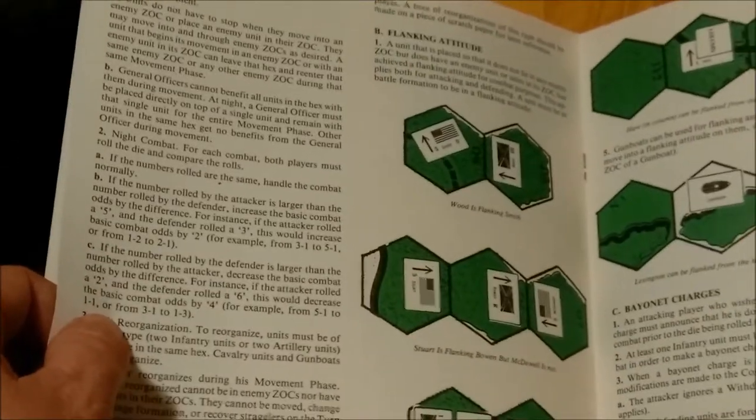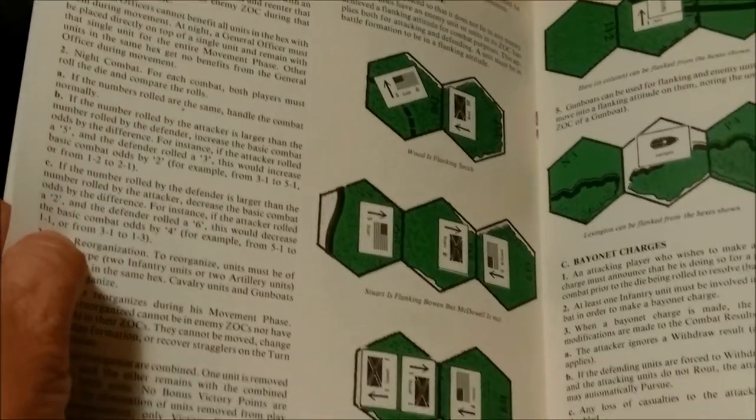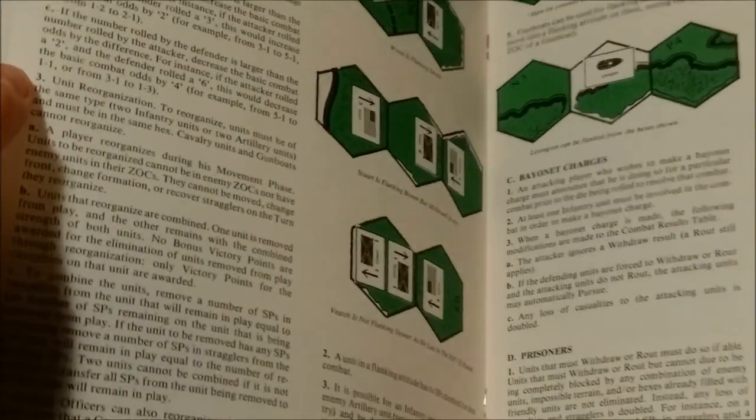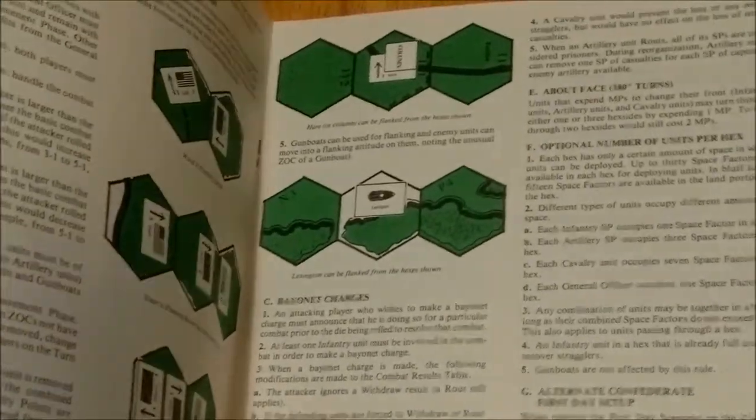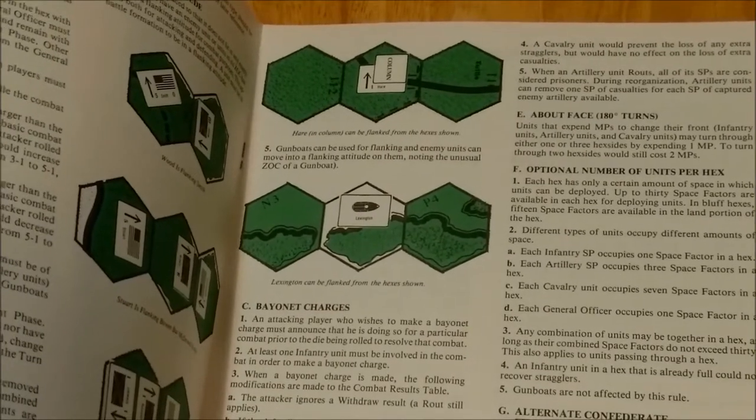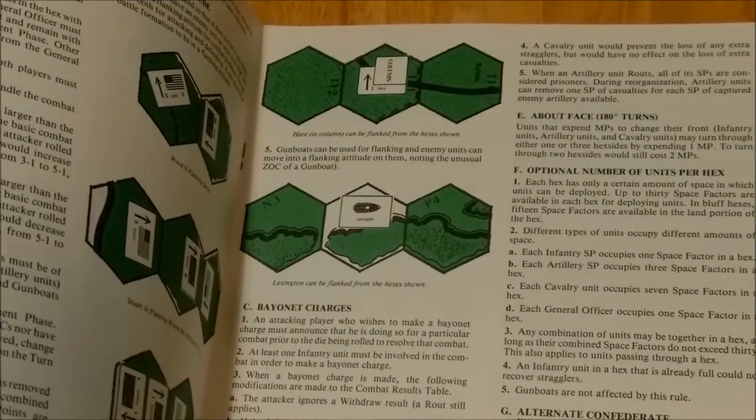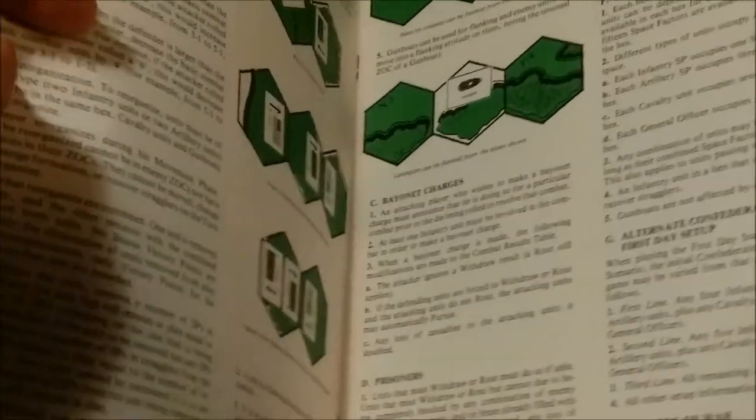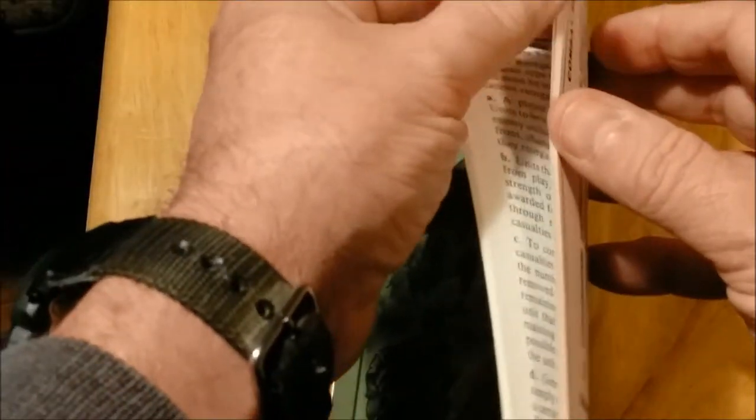It basically costs enemy unit one extra movement point to enter. Then we have some optional rules such as flanking, bayonet charges, prisoners, about facing turns. There's the optional number of units per hex, which is based on space factors. And an alternate Confederate first day setup.